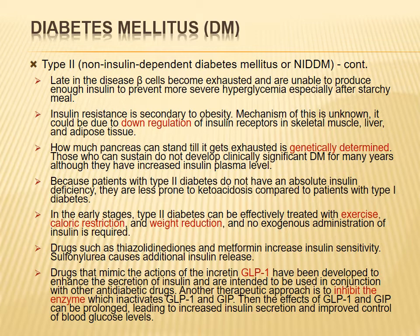The duration of beta cell compensation varies between individuals. Those with genetic predisposition deteriorate faster. It is estimated that beta cells die at about 10% per year after exhaustion. After ten years of severe uncontrolled diabetes, a Type 2 patient may become similar to a Type 1 patient — with few or no functional beta cells — and require insulin therapy.